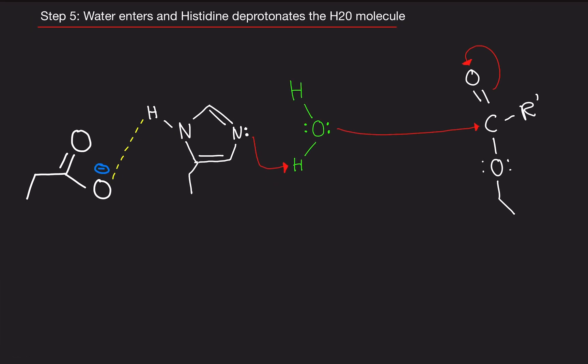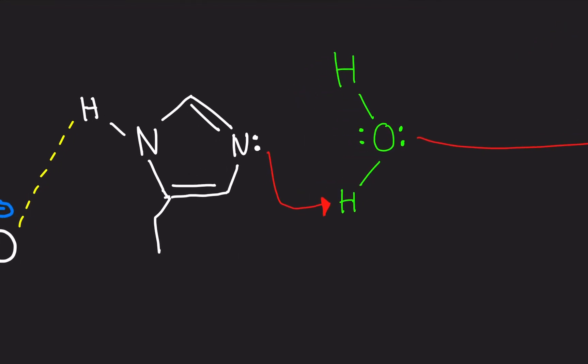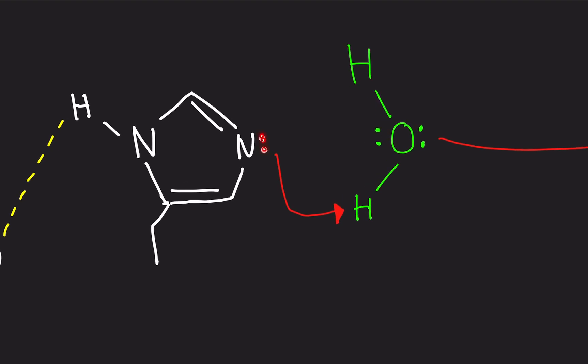A random water molecule is going to come into this reaction now. And histidine is going to deprotonate it. There are lone electrons on the nitrogen of histidine, and this is going to come and attack the water molecule, the hydrogen of the water molecule. So it's a random water molecule that just appeared out of nowhere. And what's going to happen, it's going to break off. And basically the hydrogen is going to bond to the nitrogen here.